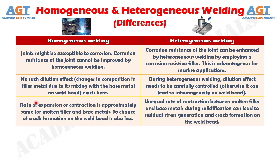Difference number 8: The rate of expansion or contraction is approximately the same for molten filler and base metals in homogeneous welding, so the chance of crack formation on the weld bead is also less, whereas in heterogeneous welding, unequal rates of contraction between molten filler and base metals during solidification can lead to residual stress generation and crack formation on the weld bead.